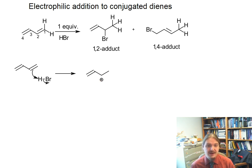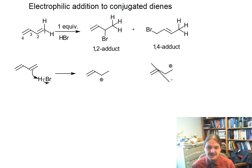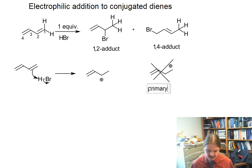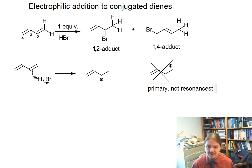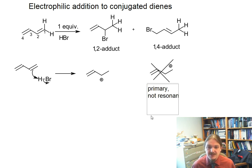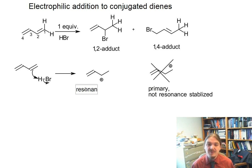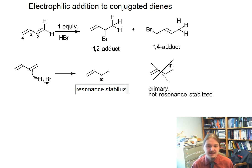We form this carbocation — and not this other carbocation I just drew, which has a whole lot of problems: it's primary and it's not resonance stabilized. So the Markovnikov rule is still going to hold here, but we're going to form the more stable of the two possible carbocations. And so we're going to form the carbocation that's resonance stabilized.